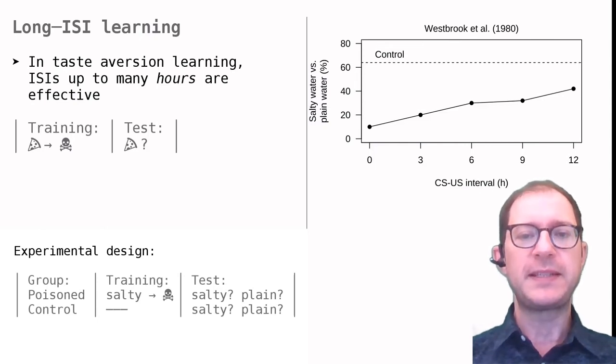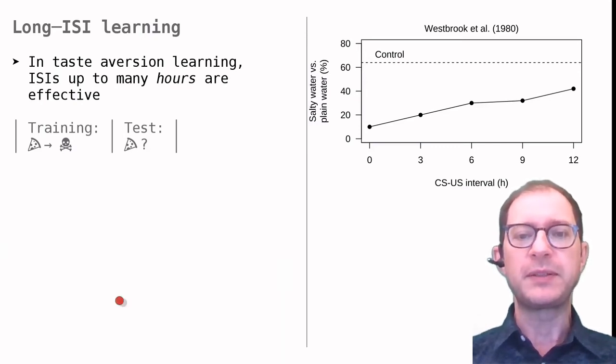After they recovered from the sickness, they were given a choice between drinking the salty water or plain water. The graph shows how much salty water they drank compared to plain water. The dashed line is from a control group that was not made sick after drinking salty water. This group preferred plain water but still drank about 60% as much salty water as plain water. As we can see, all experimental groups drank less than this.